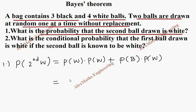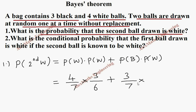For the first case — getting white first — the probability is four out of seven total balls, times three out of six remaining, since one white has been taken and there is no replacement. So P(white first) × P(white second | white first) = 4/7 × 3/6.